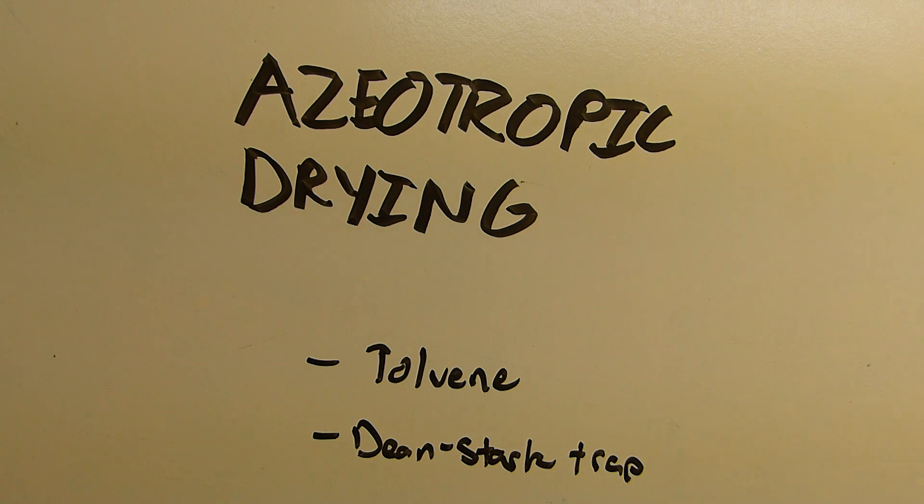Anyway, azeotropic drying is an interesting laboratory technique that's used to dry things that are sensitive to heat, and it's generally done in either benzene or toluene because they happen to form azeotropes with water, which is what you're trying to remove, and it uses a fancy piece of apparatus called the Dean Stark Trap.